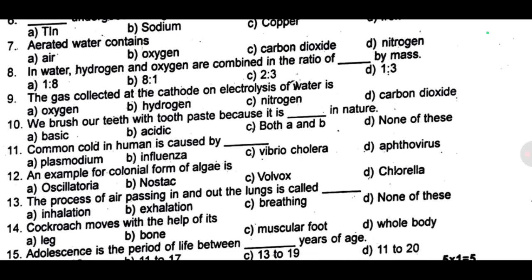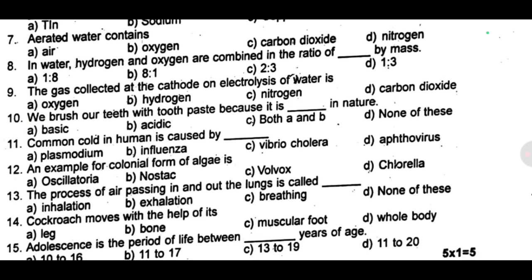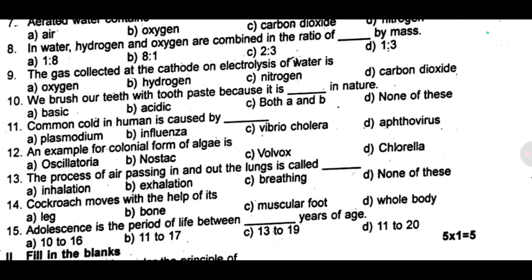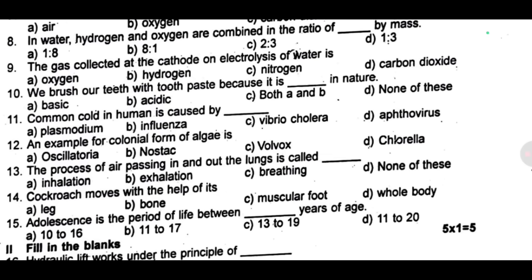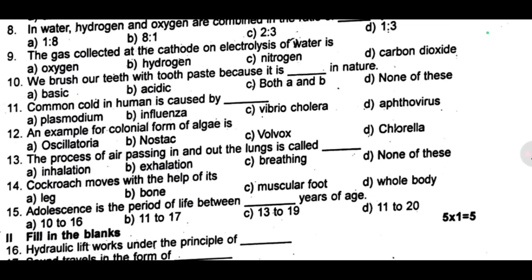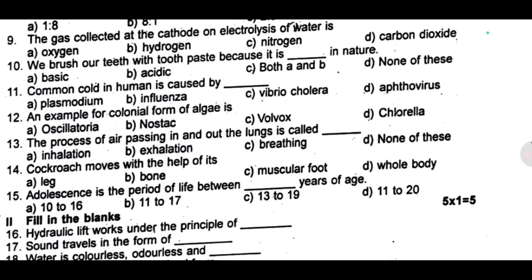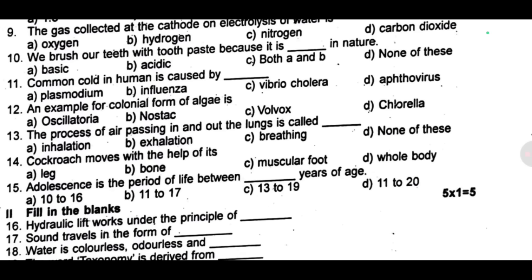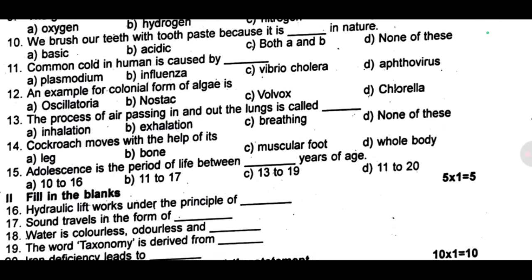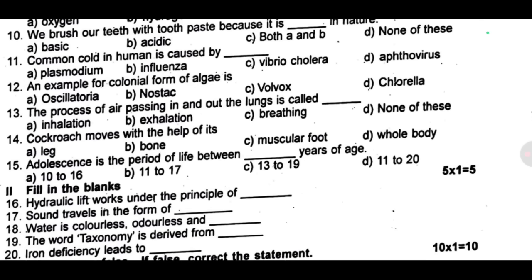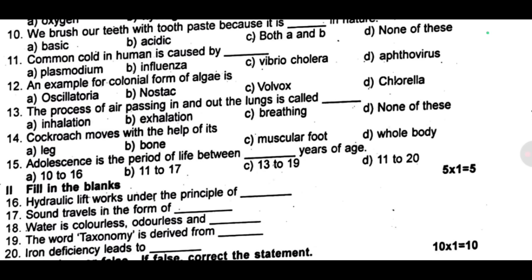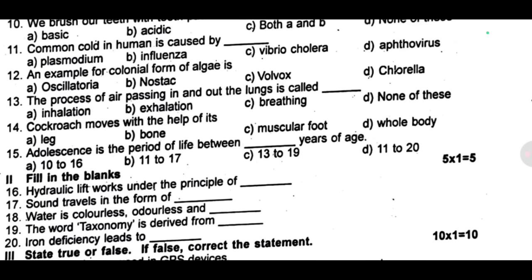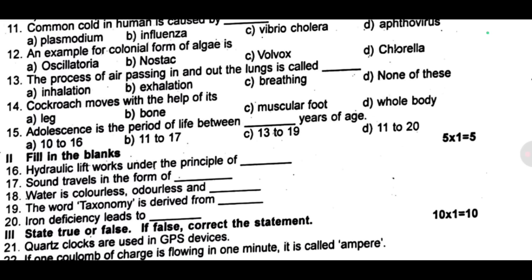Thirteenth one: the process of air passing in and out of the lungs is called dash. Fourteenth one: cockroach moves with the help of its dash. Fifteenth one: adolescence is the period of life between dash years of age. Next fill-in: hydraulic lift works under the principle of dash. Sound travels in the form of dash. Water is colorless, odorless and dash. The word taxonomy is derived from dash. Twenty: iron deficiency leads to dash.